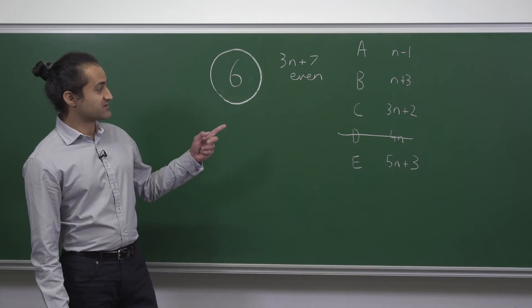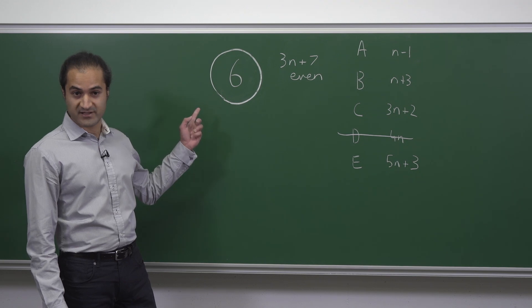For the rest, we can look at the difference between the expression and 3n plus 7, which we know is even.